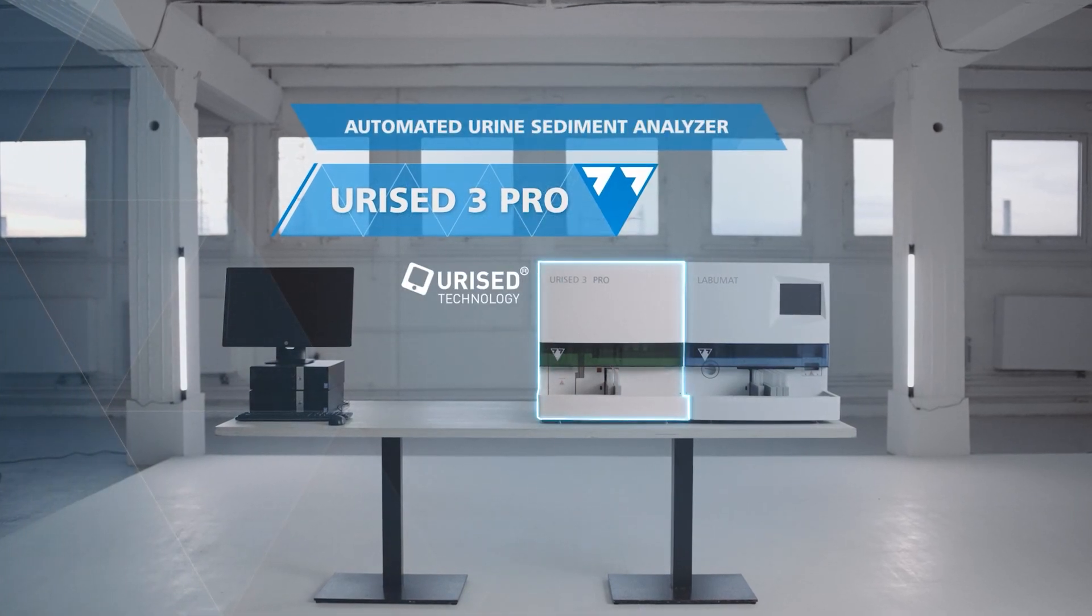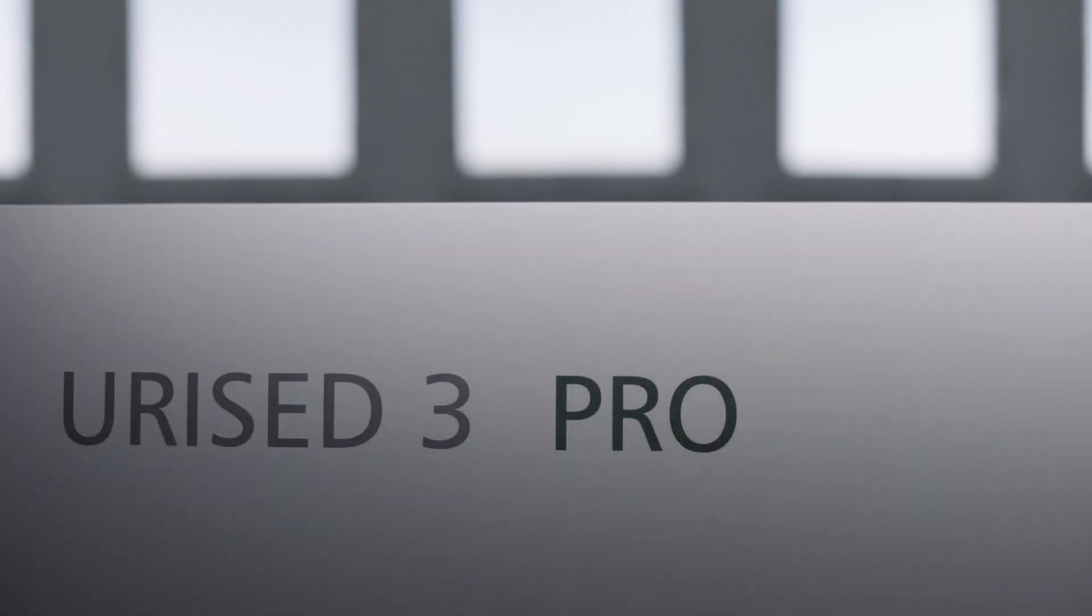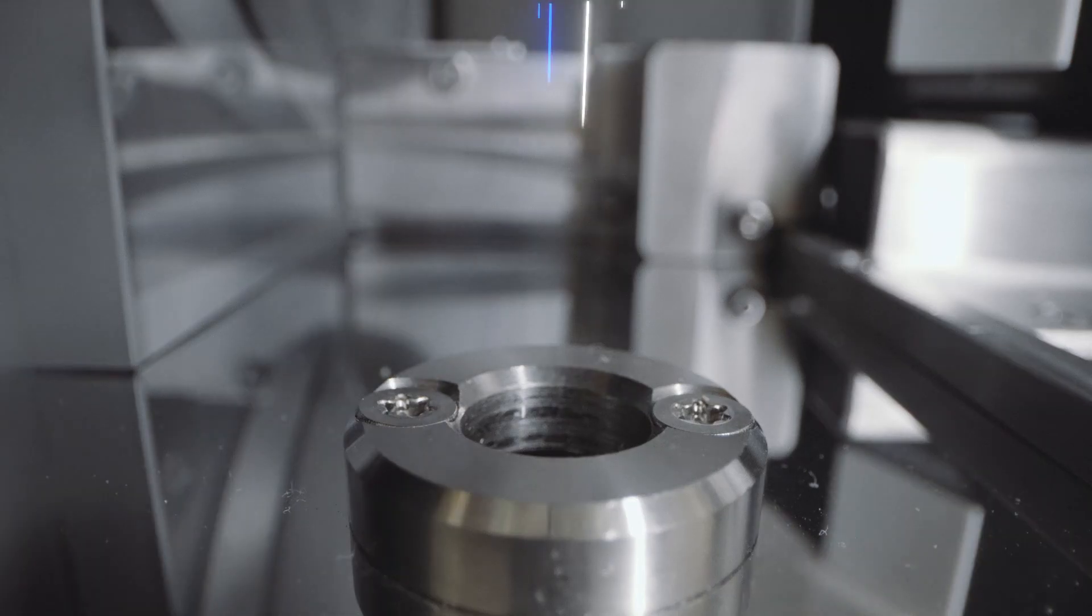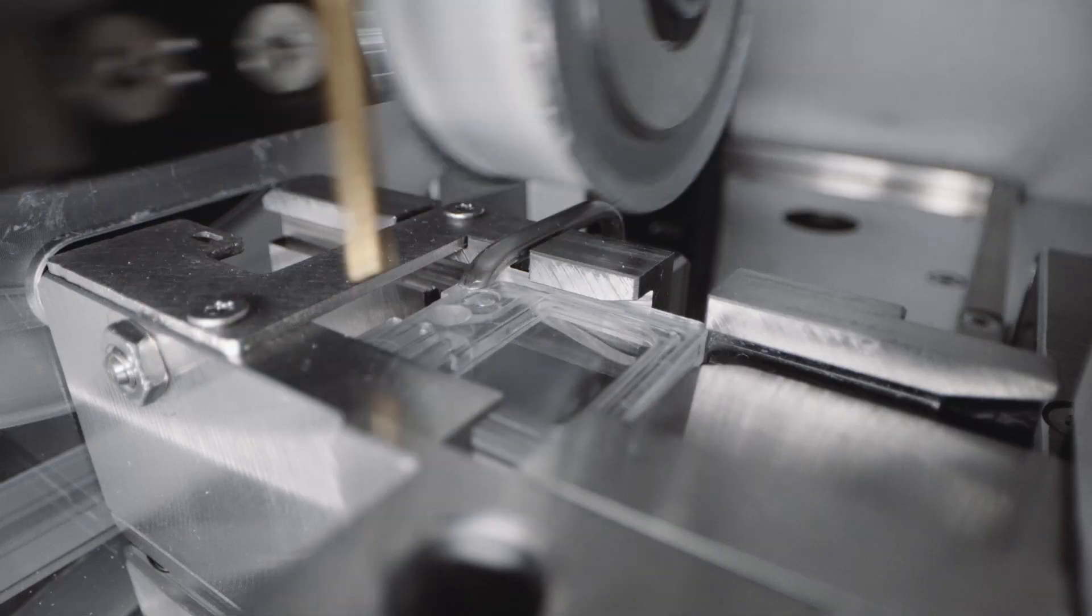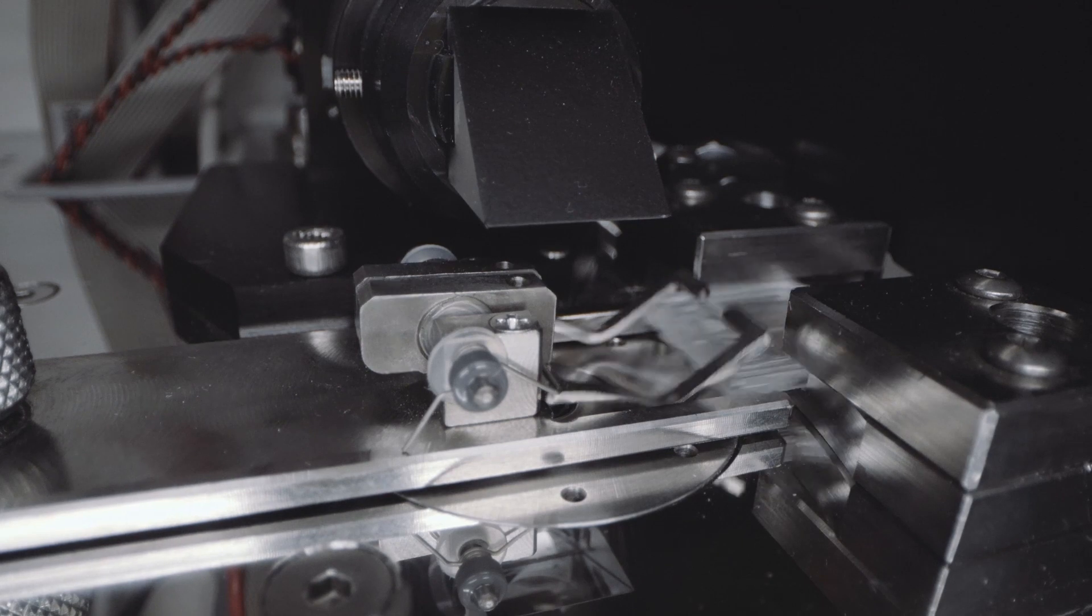UriSed 3 Pro is an automated urine sediment analyzer with a revolutionary new optical system combining bright field and phase contrast microscopy, analyzing native urine in a special counting chamber and providing results for 18 different parameters.